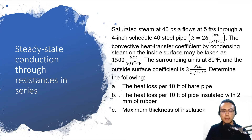Saturated steam at 40 PSIA flows at 5 feet per second through a 4-inch Schedule 40 steel pipe with a given thermal conductivity of 26 BTU per hour per feet per degrees Fahrenheit. The convective heat transfer coefficient by condensing steam on the inside surface may be taken as 1,500 BTU per hour per square feet per degrees Fahrenheit. The surrounding air is at 80 degrees Fahrenheit and the outside surface coefficient is 3 BTU per hour per square feet per degrees Fahrenheit.